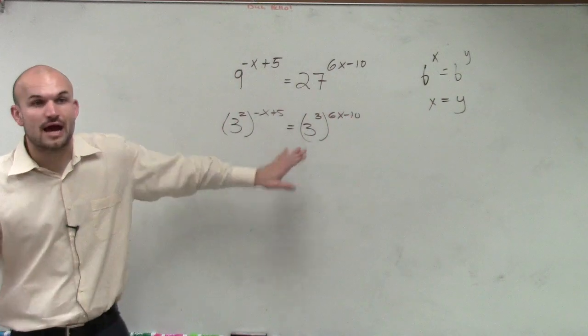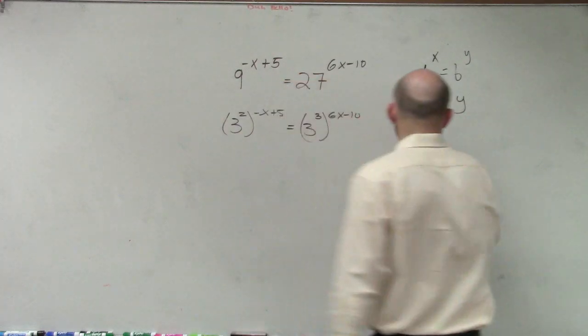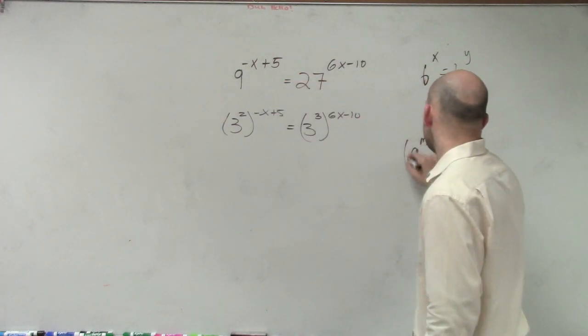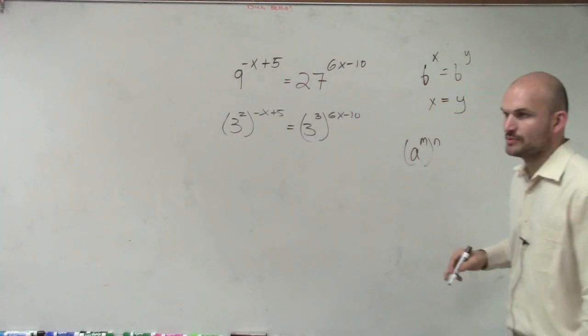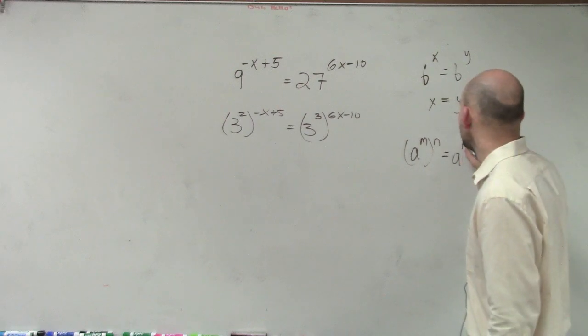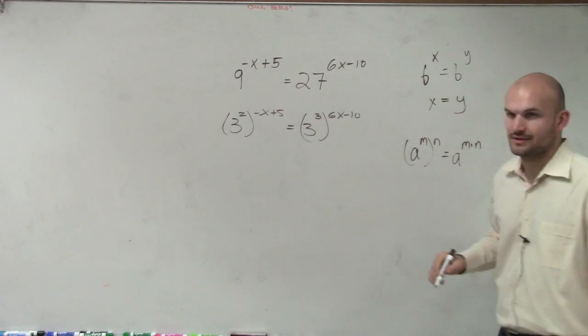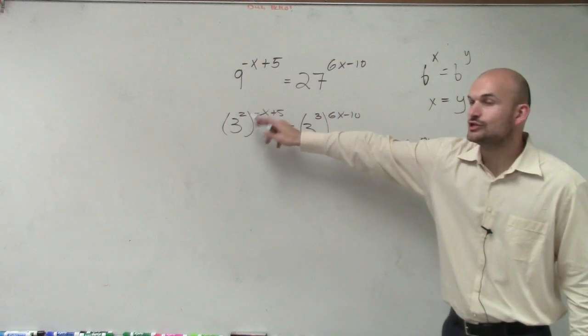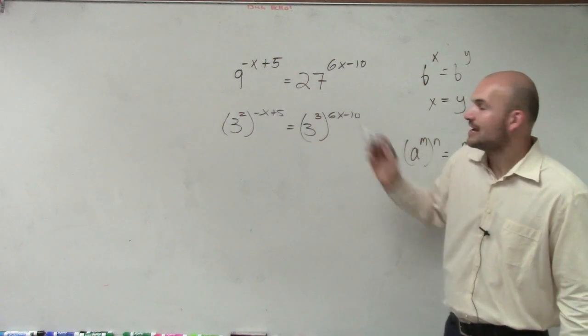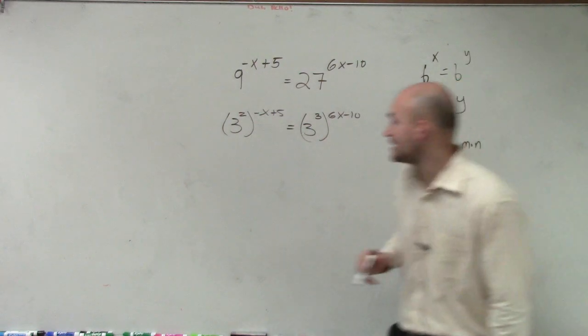Now, we need to make sure we have a power of a power rule, which says a to the m raised to another exponent n equals a to the m times n.